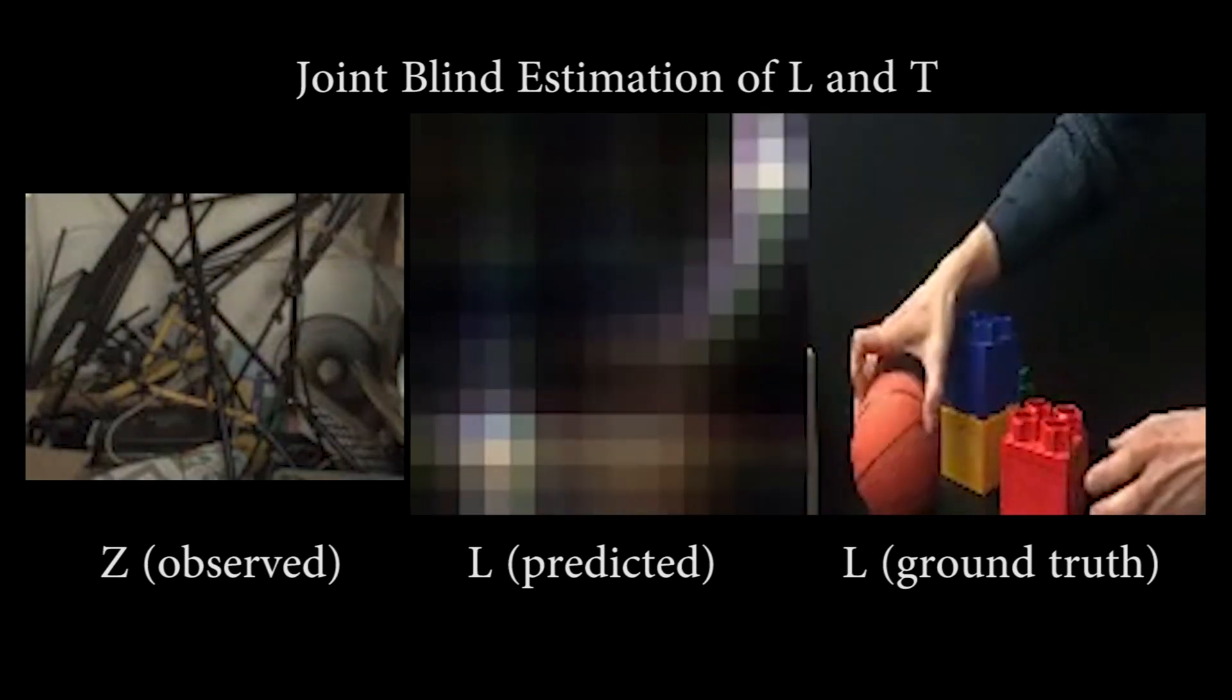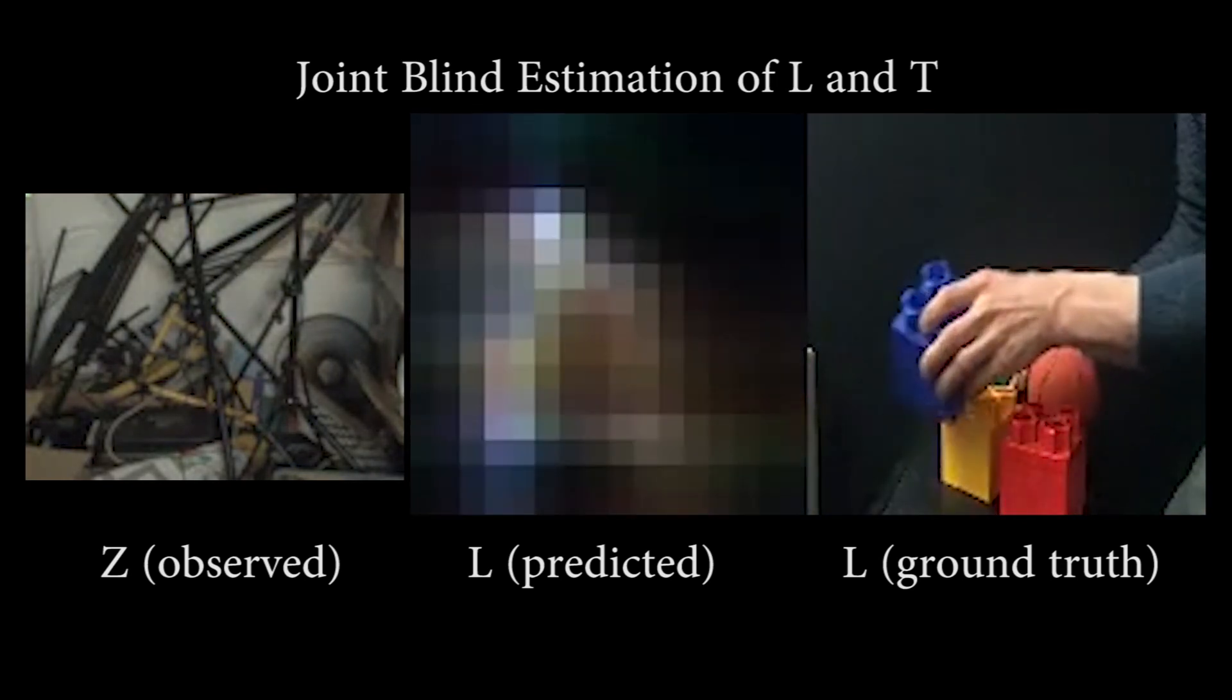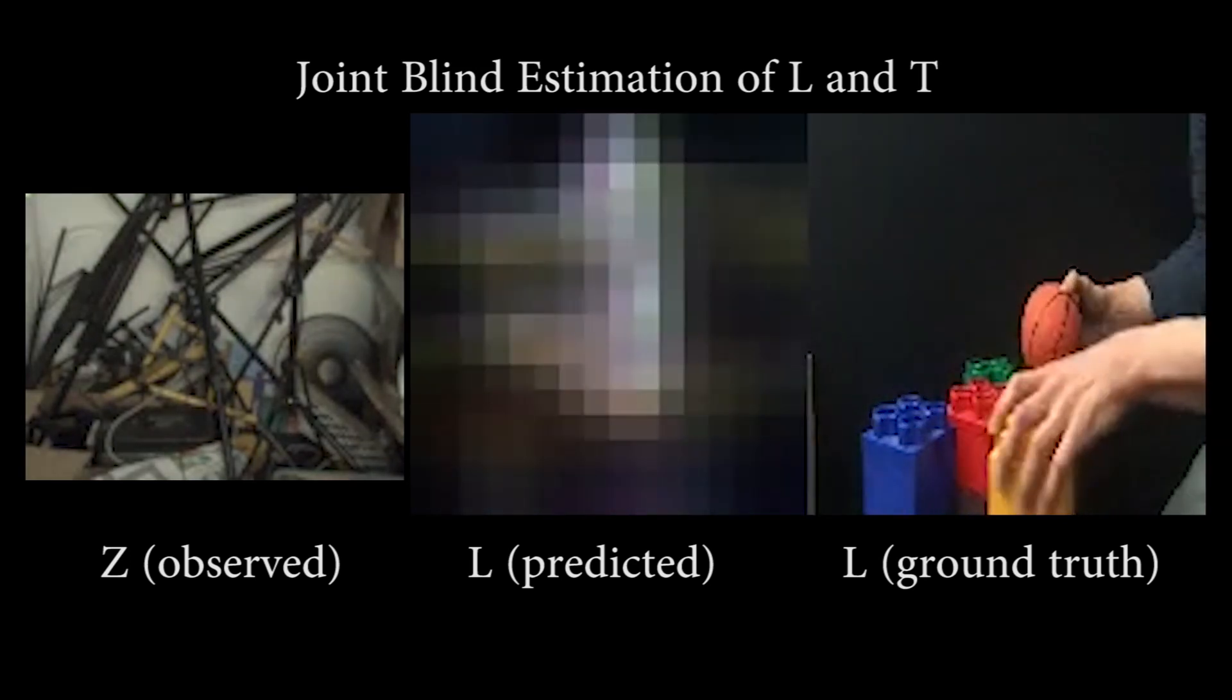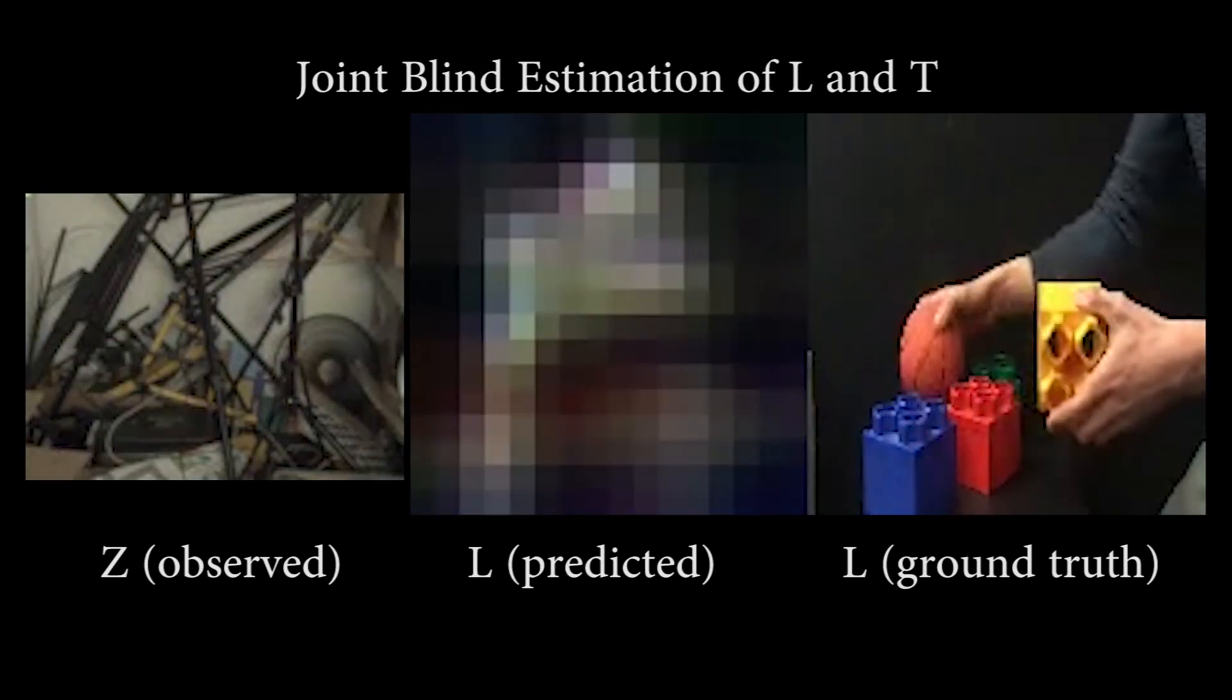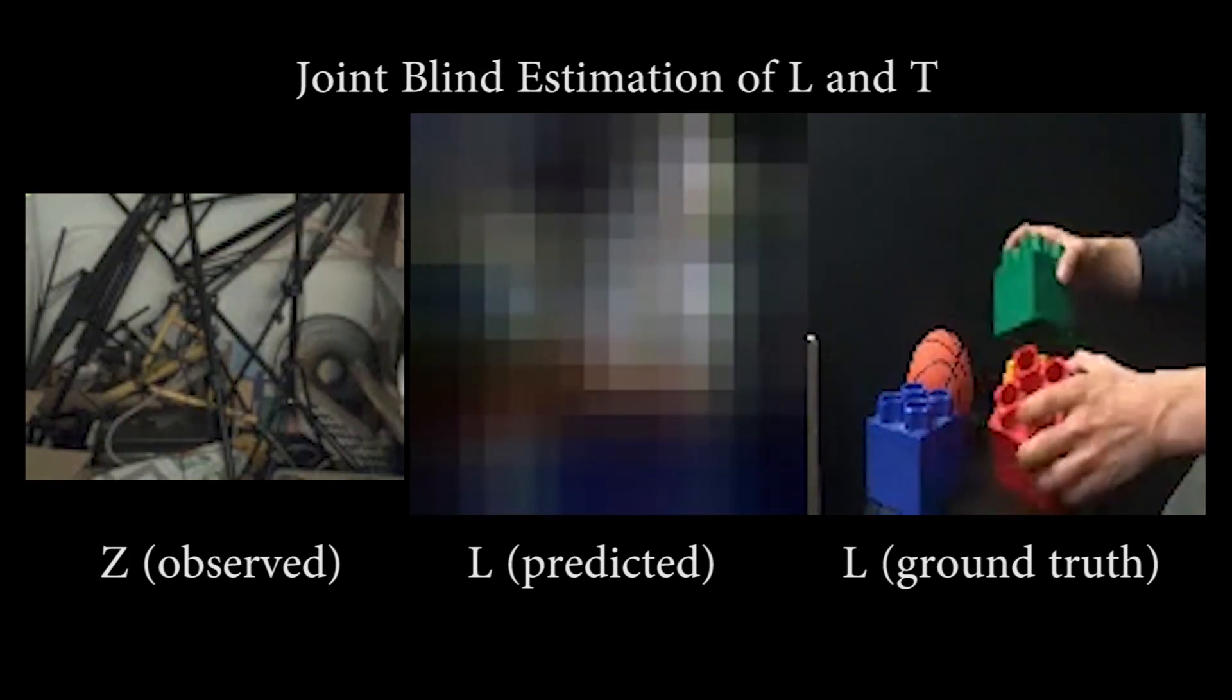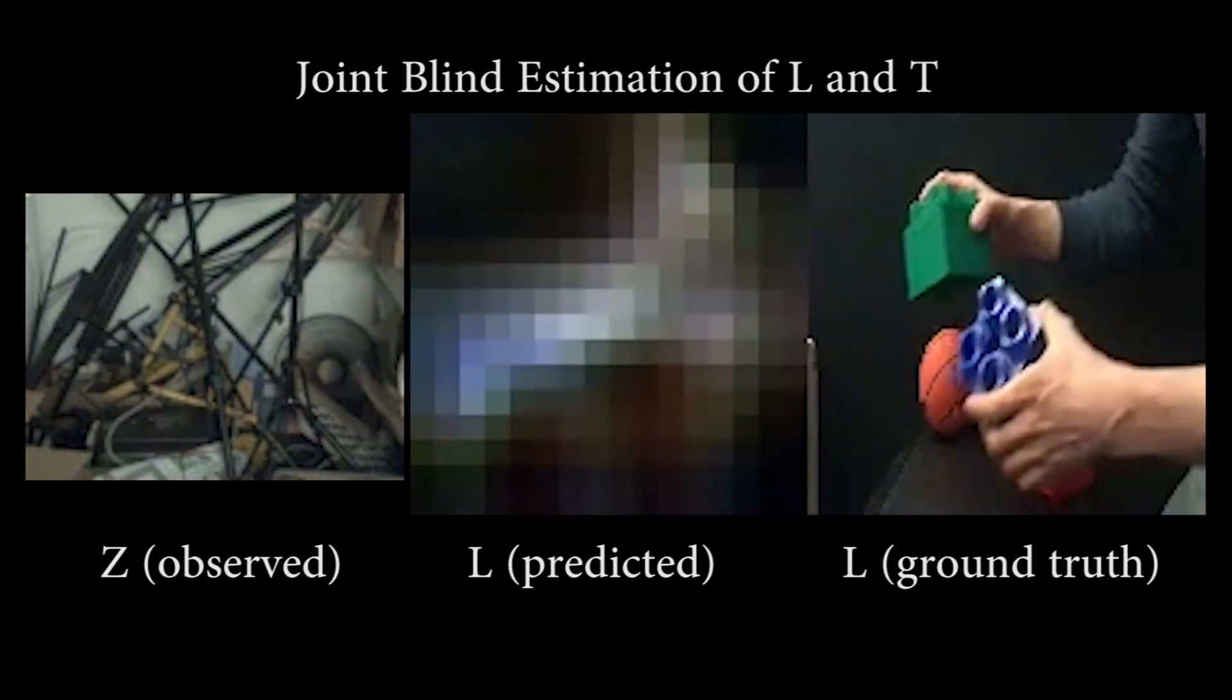In this result, the hidden video is a complex sequence of various moving objects. While the recovered video lacks high-frequency detail, it identifies general color and motion that is suggestive of the activity taking place in the hidden video.